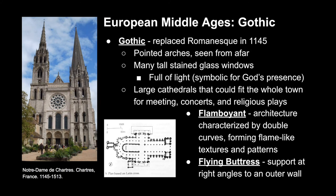Moving on to 1145, Gothic architecture replaces the Romanesque. It has pointed arches so tall they can be seen from afar, and many stained glass windows that allow a lot of light into the space — symbolic of God's presence. Because these spaces were so large, they often served for meetings, concerts, and religious plays, fitting the whole town. Other characteristics include flamboyant aspects — basically double curved forms that create flame-like textures and patterns — and the flying buttress, which was a support at a right angle to an outer wall.